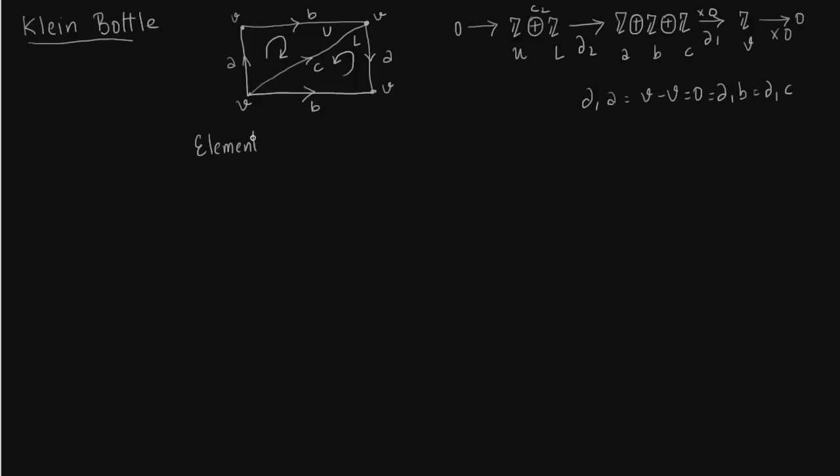So now we want to study the map delta 2. So before we study the map delta 2, we have to determine what are the elements of C2. So elements of C2 are of the form P·U plus Q·L, where P and Q are integers.